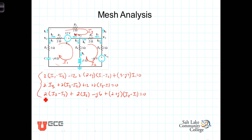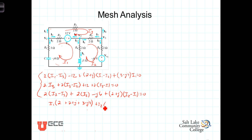Once again we have three equations and three unknowns, so let's combine the terms. For I1 we've got 2 plus 2 plus j plus 3 minus j4, giving us the coefficient for I1. For I2 we've got a negative 2 plus j contribution, so minus 2 minus j. For I3 it looks like just a minus 2. Bringing the 12 volts to the other side gives us a positive 12 on the right-hand side.